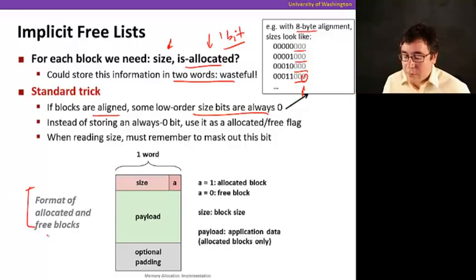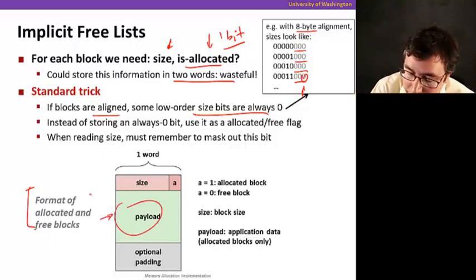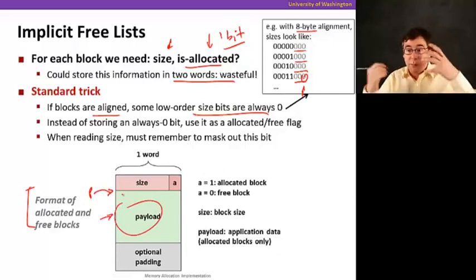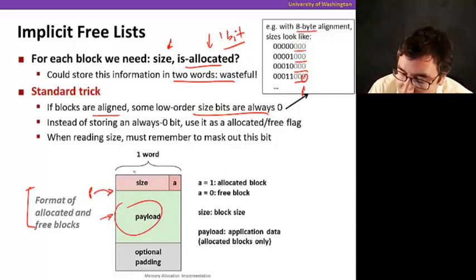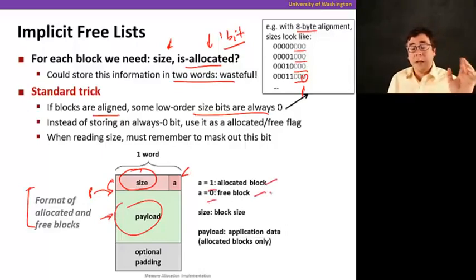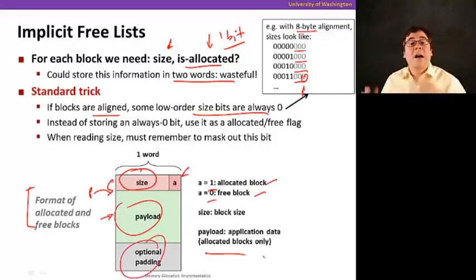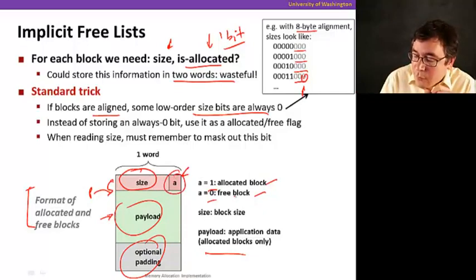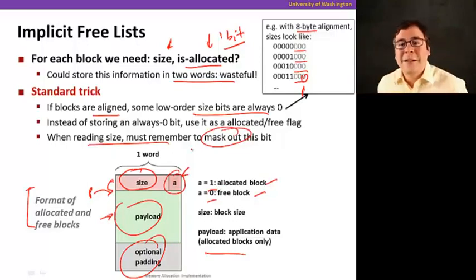So now, here's the format then of allocated blocks. We have the payload, that's the useful part, and P is going to point to here. P is the pointer to the block. We know that the previous word here, the previous word contains the size and the low order bit is going to tell us if it's set to one, the block is allocated. If it's set to zero, the block is free. And payload might be some padding because we might have some padding here because we want to honor alignment requirements. So note that since we're going to use this bit for, the lower bit for allocation, whenever we're reading the size, we need to mask out this bit. And you know how to do that because you know everything about fiddling with bits by now.